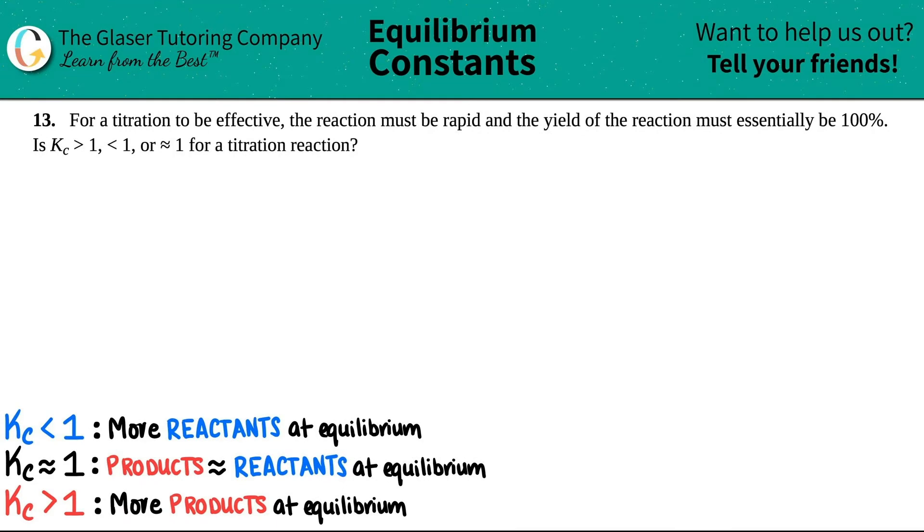Number 13. For a titration to be effective, the reaction must be rapid and the yield of the reaction must essentially be 100%. Is Kc greater than 1, would it be less than 1, or roughly around 1 for a titration reaction? Good question.